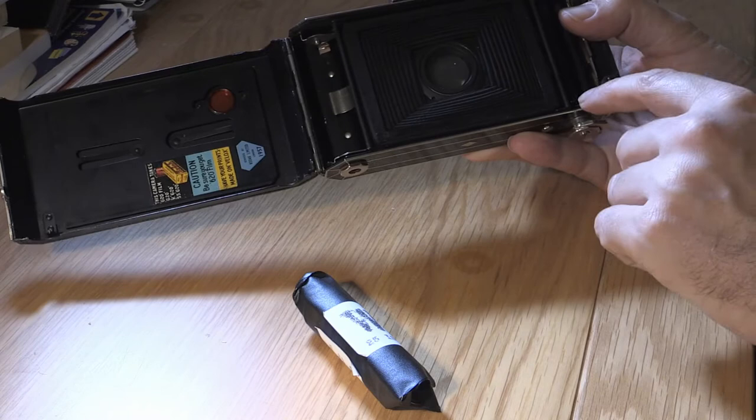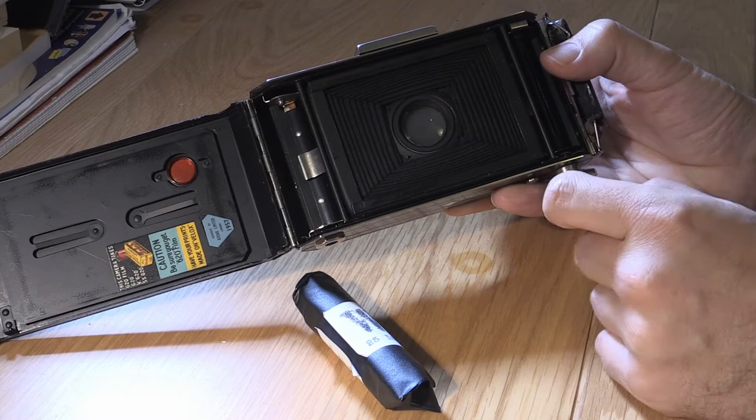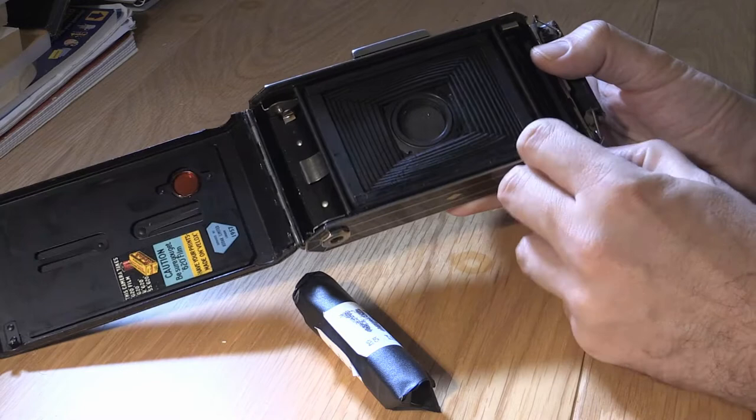So the film goes in there, and then you pull it through into this other spool on the opposite side. So this spool also has to be a 620 spool, and like I said, that's a bit smaller than a 120, and they're usually metal, but you can get them off eBay quite readily.